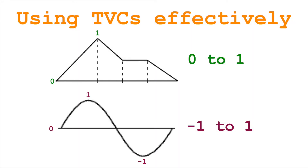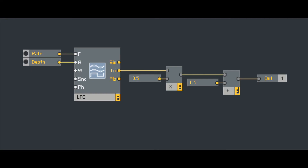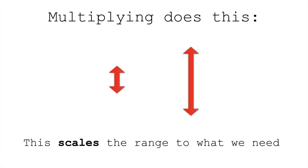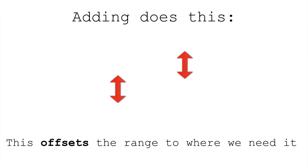A final thought about envelope generators and LFOs: usually an envelope generator will generate a control signal that goes from zero to one, whereas an LFO will generate a control signal that goes from negative one to one. So we need to be careful that we do the correct math when we apply each of these time-variant controllers. Different systems will handle this in different ways, but oftentimes you're going to be multiplying and then adding — taking the control signal from your time-variant controllers, multiplying it to change the range, and then adding to change its offset.